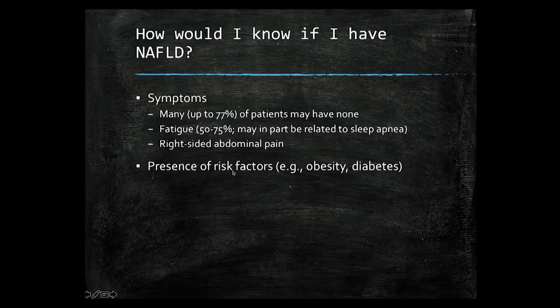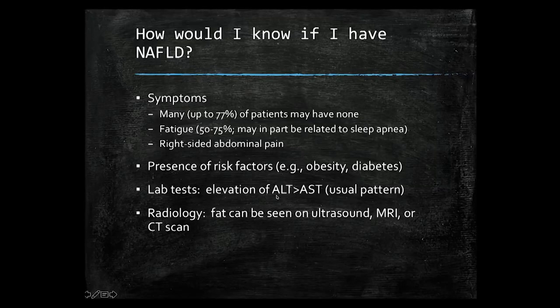Other things that might make you suspicious of having fatty liver is the presence of risk factors. I've already mentioned the high prevalence of fatty liver in patients who are obese or have diabetes. Lab testing may also clue you or your healthcare providers into the fact that fatty liver may be present with the liver enzymes — specifically ALT and AST — being elevated. Usually ALT will be higher than the AST.